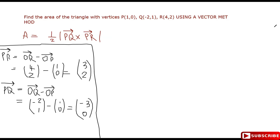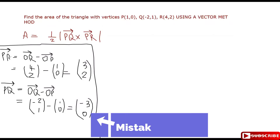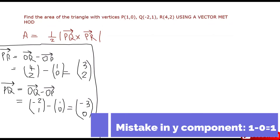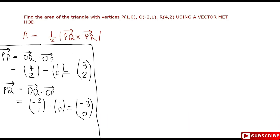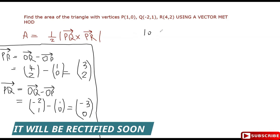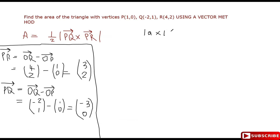Now we have PR and PQ and we need to find the cross product. Remember, by definition the cross product A cross B equals the norm of A times the norm of B times the sine of theta, where theta is the angle between the two vectors. This is the definition of the cross product.